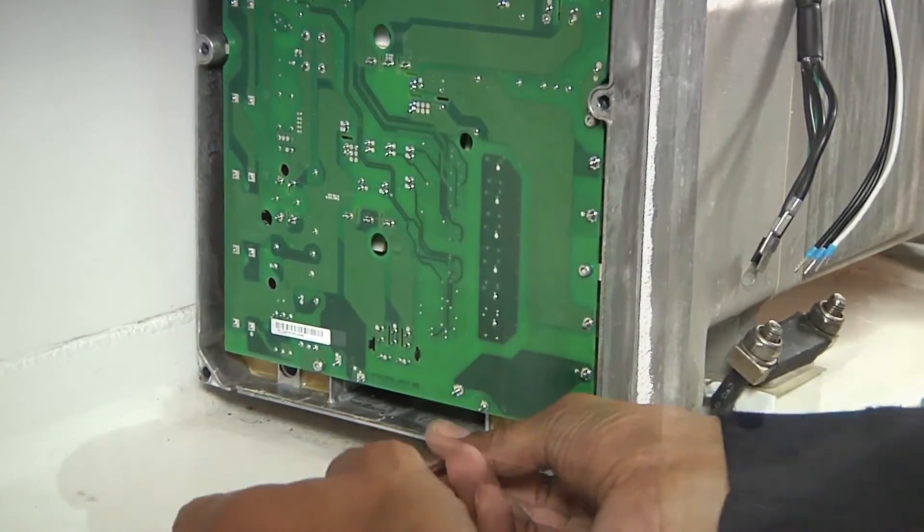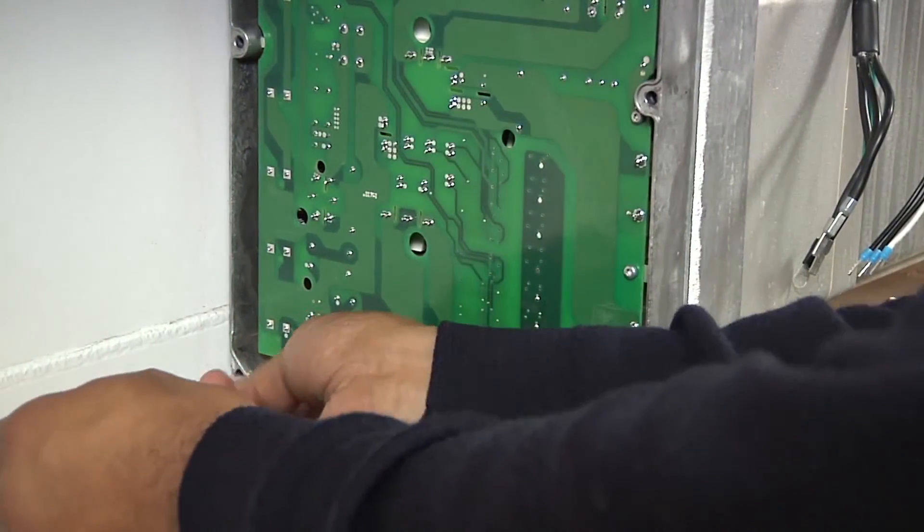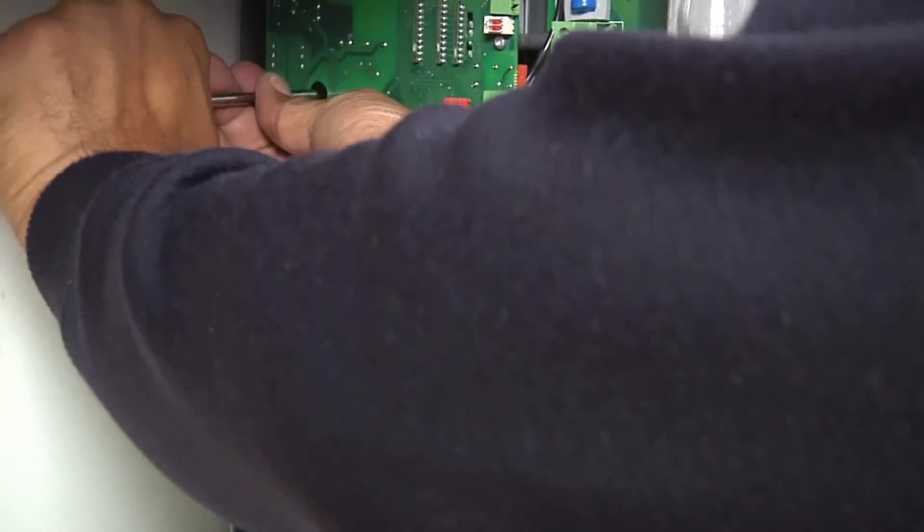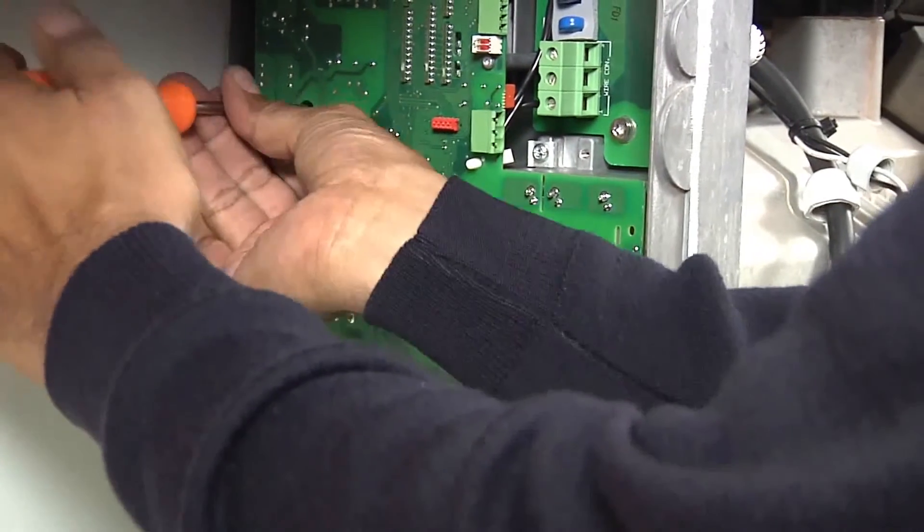After removal of the black cover, dismount the four screws inside the frequency converter. Their locations are in each corner of the printed circuit board.